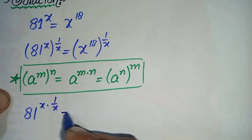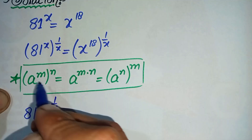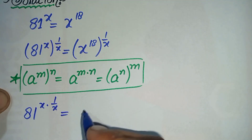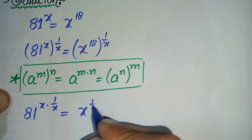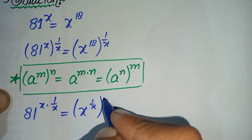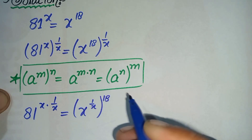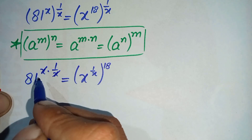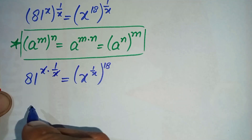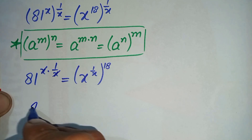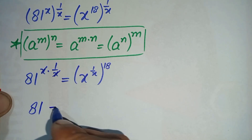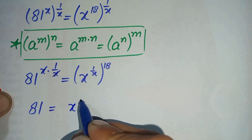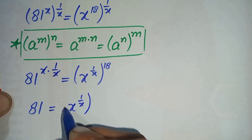On the right hand side we will interchange the powers, so it will become x raised to power 1 over x, whole raised to power 18. On the left hand side, x and x cancel with each other, leaving only 81. So we have 81 is equal to x raised to power 1 over x, whole raised to power 18.